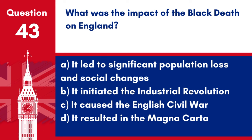Question 43. What was the impact of the Black Death on England? A. It led to significant population loss and social changes. B. It initiated the Industrial Revolution. C. It caused the English Civil War. D. It resulted in the Magna Carta. Answer: A. It led to significant population loss and social changes. The Black Death had a profound impact on England, causing significant population loss and subsequent social changes.